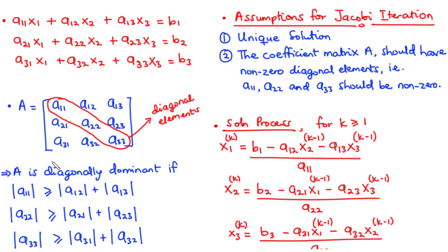So A is diagonally dominant if the absolute value of A11 is greater than or equal to |A12| plus |A13|, the absolute value of A22 is greater than or equal to |A21| plus |A23|, and the absolute value of A33 is greater than or equal to |A31| plus |A32|.